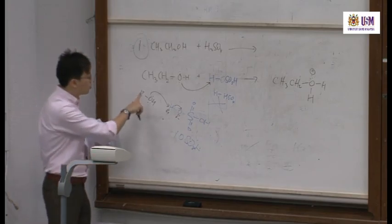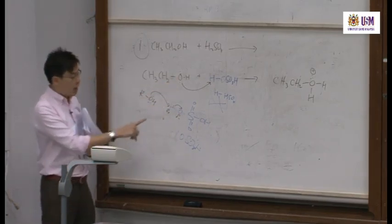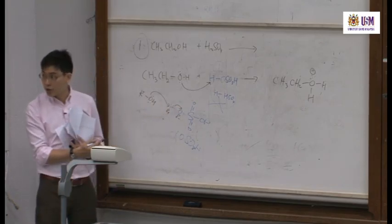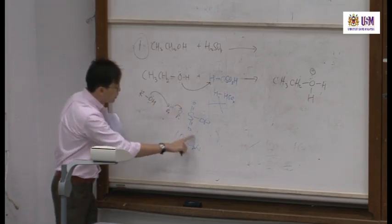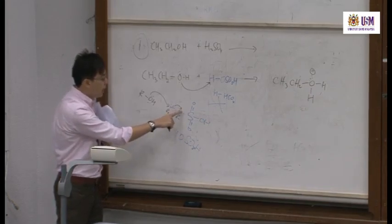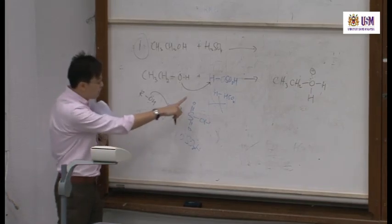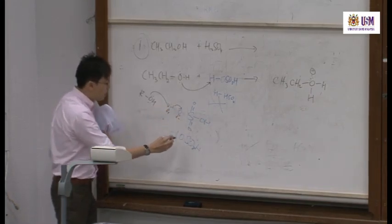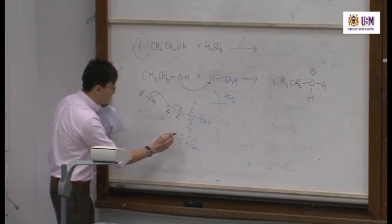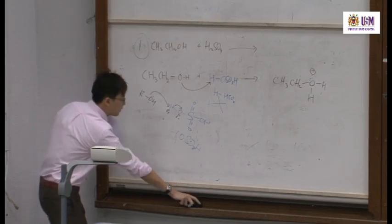You will only choose to attack the H which is closer to it, and it forms a heterolytic cleavage. This whole species, this whole side, becomes a negative charge. So in simple form, if you draw it out, you will get this.